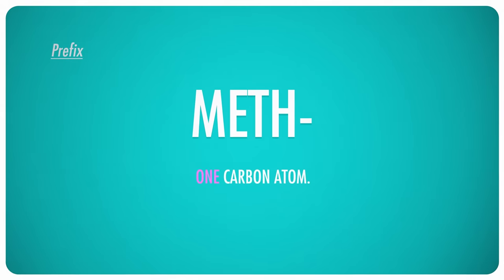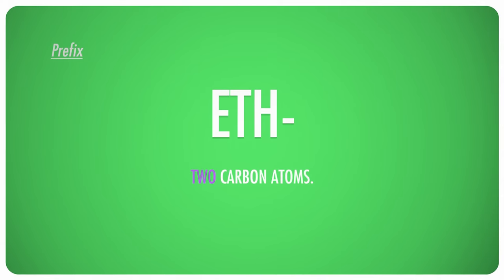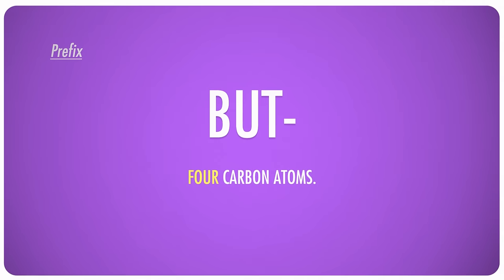Here's one that I know you've heard before: meth. Meth in a name always indicates a molecule or branch containing one carbon atom. So the difference between amphetamines that doctors prescribe and methamphetamines sold on the streets is that methamphetamine has a methyl group — CH3, with one carbon — where amphetamine just has a single hydrogen atom. Eth indicates two carbon atoms, prop means three, and but means four. From there, most of the prefixes will be familiar from geometry class.